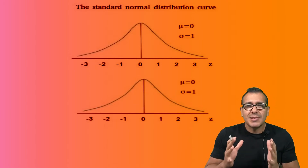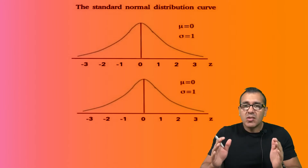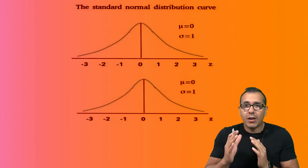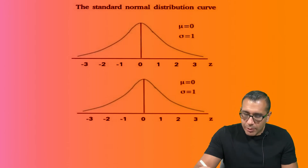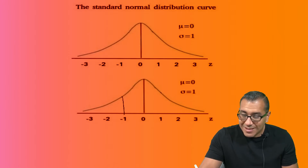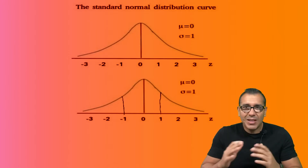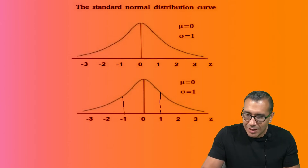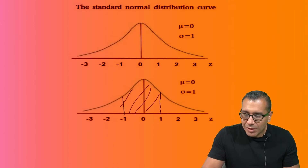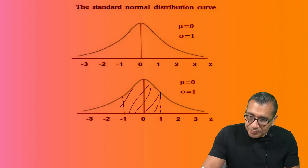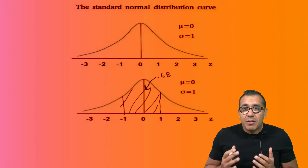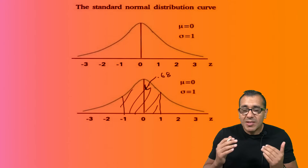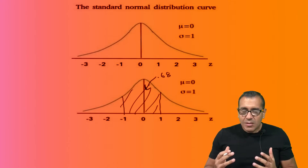Z-scores tell us how many standard deviations we are away from the mean. Typically, we've been working with nice numbers — like Z-scores of one standard deviation away from the mean, two standard deviations away. Using our empirical rule, we know that 68% of that population is within one standard deviation.